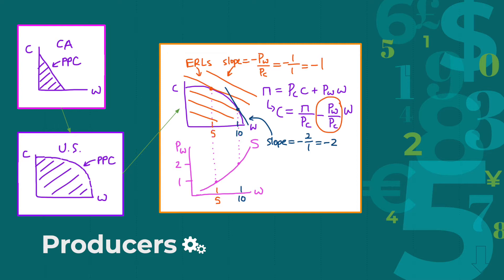We can then superimpose all 50 of these lines onto one big graph, from flattest slopes to steepest slopes, representing the PPC for the U.S. In this way, we can maximize output by having each state produce what it's best at producing, and we can make this curve more continuous.